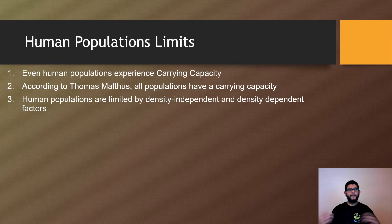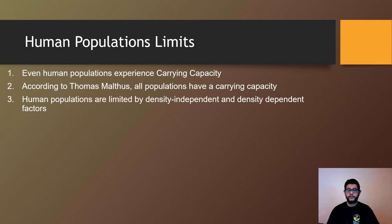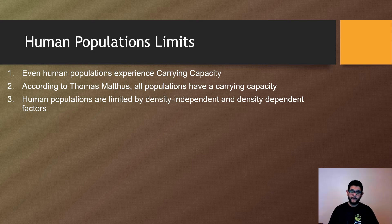So there are limits. We've talked about carrying capacity and how other species have to deal with it, but humans do too. And this was brought up by Thomas Malthus. His idea was that all populations have a carrying capacity and there's going to be limits and issues. So when we talked about overshoot and dieback previously, those are going to be limited by either density independent or dependent factors.